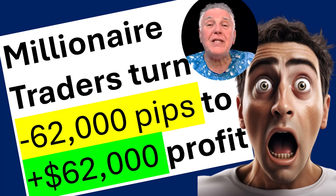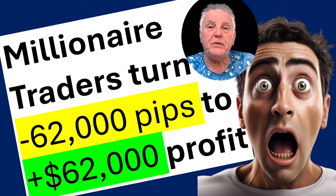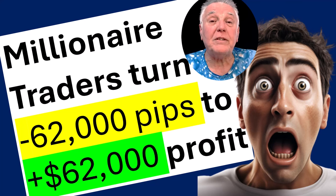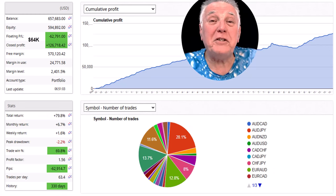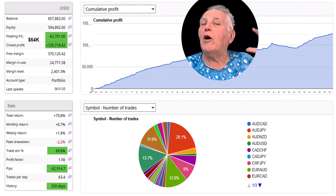On your screen you can see an example of 62,000 negative pips being turned into 62,000 positive dollars. Now this is starting to sound like magic or complete nonsense, but have a look at reality.